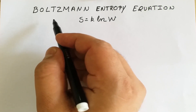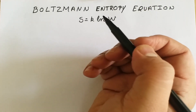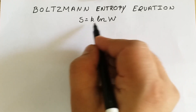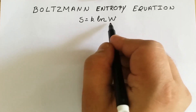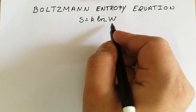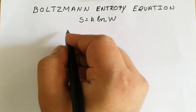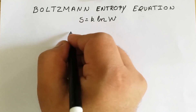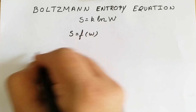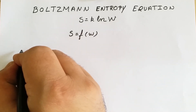Hey friends, welcome. In this lecture we are going to derive the Boltzmann entropy equation. We know that the Boltzmann entropy equation relates entropy with thermodynamic probability W, and it is given by S = k·ln(W). According to Boltzmann, entropy is a function of thermodynamic probability, that is we can write S as a function of W, and we are going to find that function using mathematics.